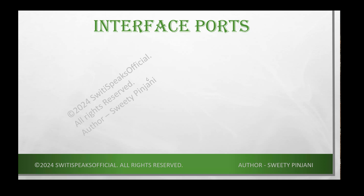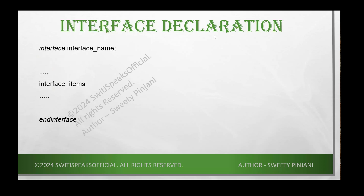The next thing to understand is interface ports. Your interface ports can be input, output, or inout — meaning it can act as both input and output. Any of these directions is valid for interface ports. To declare an interface, you use the keyword 'interface' and 'endinterface', with the interface code in between. Between these keywords you specify the interface name and whatever code you want to write — clocking blocks, tasks, functions, assignments, and so on.